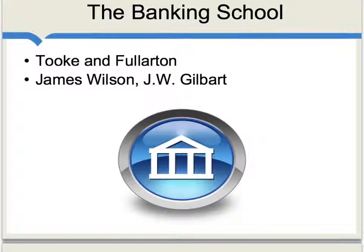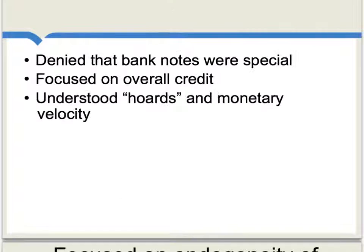On the other side of the debate was a diverse group of economists sometimes called the Banking School. The best-known economists here are Tooke and Fullerton, and also James Wilson of the magazine The Economist and J.W. Gilbert. The Banking School didn't have a fully unified vision, but there were common elements. In general, they tended to deny that banknotes were something special — they thought that simply controlling banknotes or linking them to gold wasn't really addressing economic problems. Instead, they focused on overall credit rather than money per se, including commercial credit. They also had a better understanding of what they called hoards — which we might now call monetary velocity — than did the Currency School.